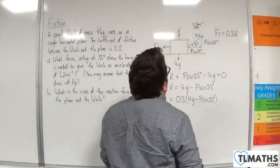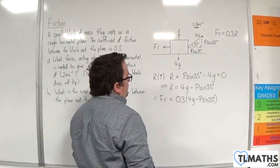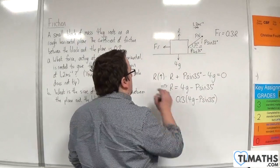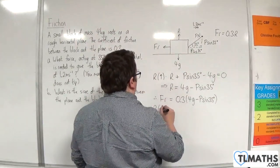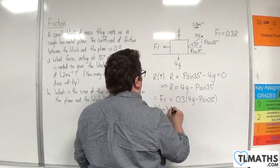Okay, so now that we have that, we can resolve horizontally. And I'm going to take to the right as positive, and that would be P cos 35.